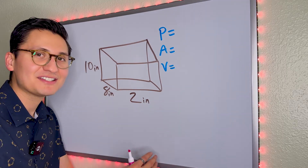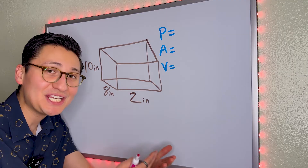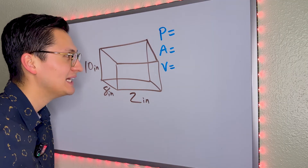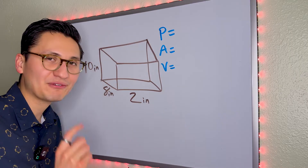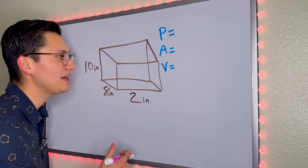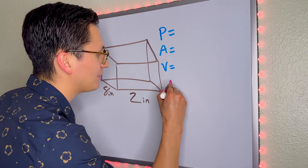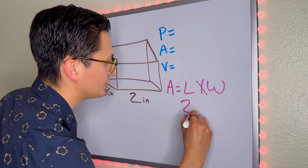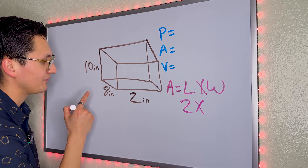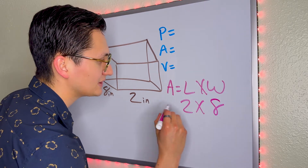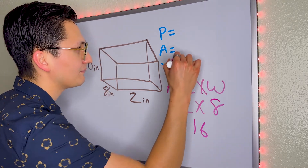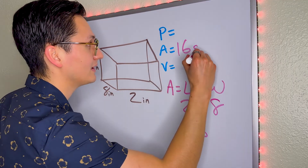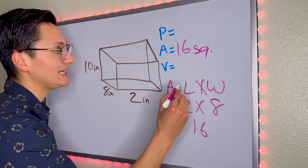As soon as you see this kind of problem, get your formula chart out — it's a cheat sheet that tells you exactly what to do. Let's do area first. Area equals length times width. The length is 2, the width is 8. 2 times 8 is 16, so the area is 16 squared inches.